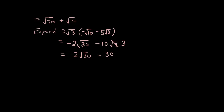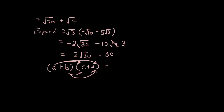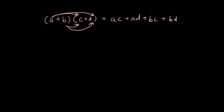Now the last concept we'll cover is expanding two brackets. So if I have (a + b)(c + d), this is called binomial expansion. We get each term in the first bracket multiplied by each term in the second bracket: first term times first, first term times second, second term times first, second term times second. That is expanding a pair of brackets. Now applying that to surds.